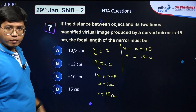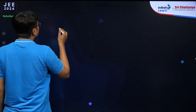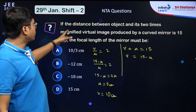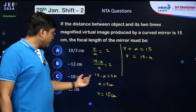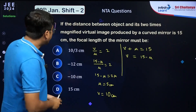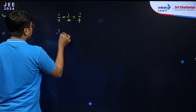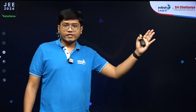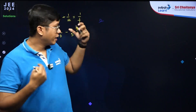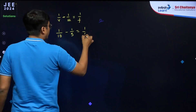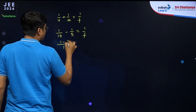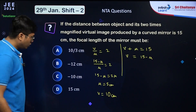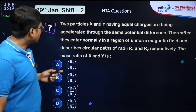For the focal length of the mirror, we use 1/v + 1/u = 1/f. Since it forms a virtual image, v is positive and u is negative: 1/10 − 1/5 = 1/f, giving (1 − 2)/10 = 1/f, so f = −10 cm. The correct option is C: −10 cm.